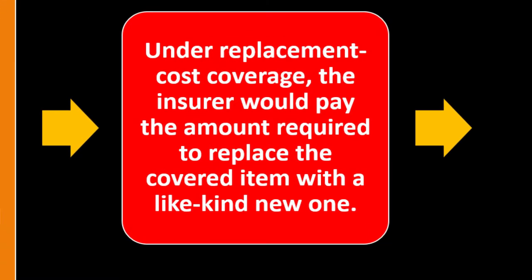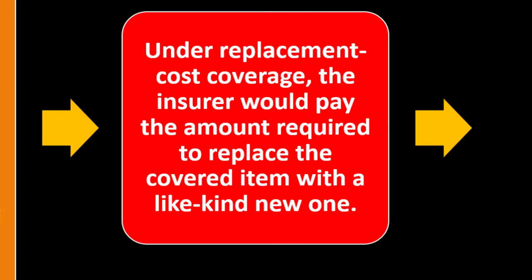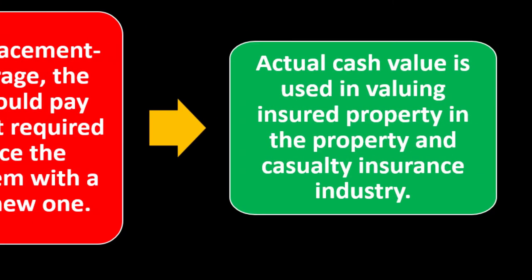Under replacement cost coverage, the insurer would pay the amount required to replace the covered item with a like-kind new car. If it's replacement cost as opposed to cash value, you'd be thinking: they need to replace it with a car of a similar nature — how much would that cost? Actual cash value is used in valuing insurance property in property and casualty insurance.